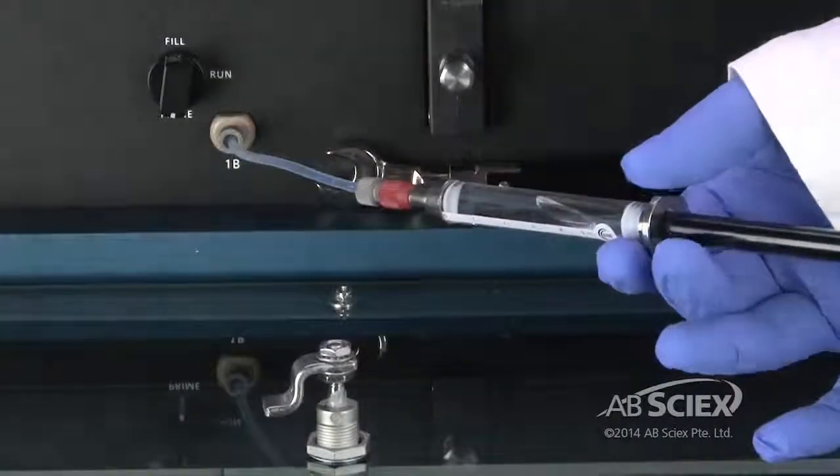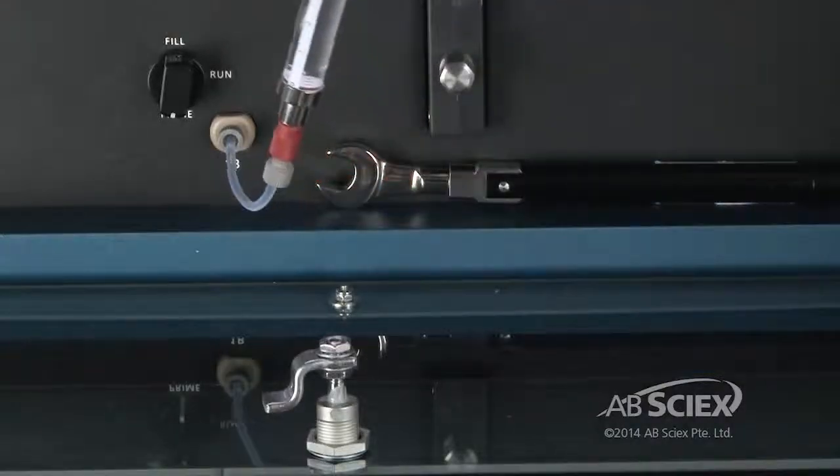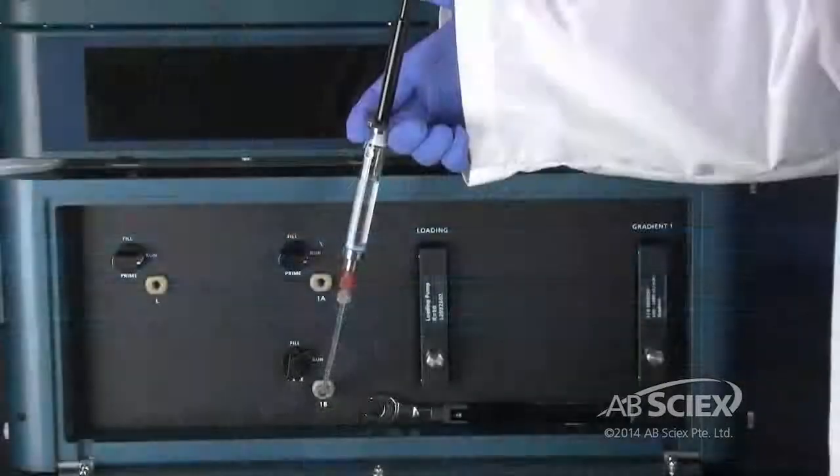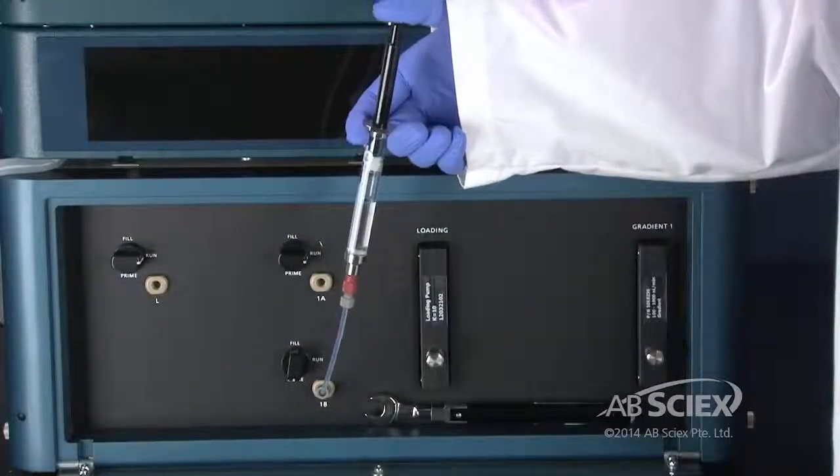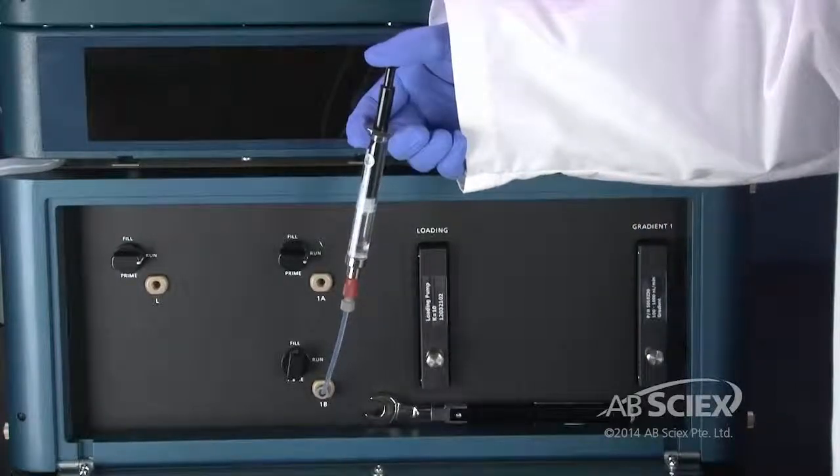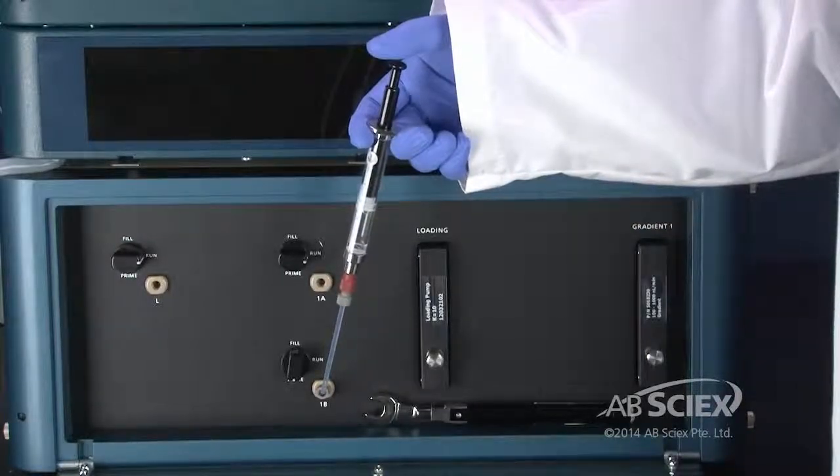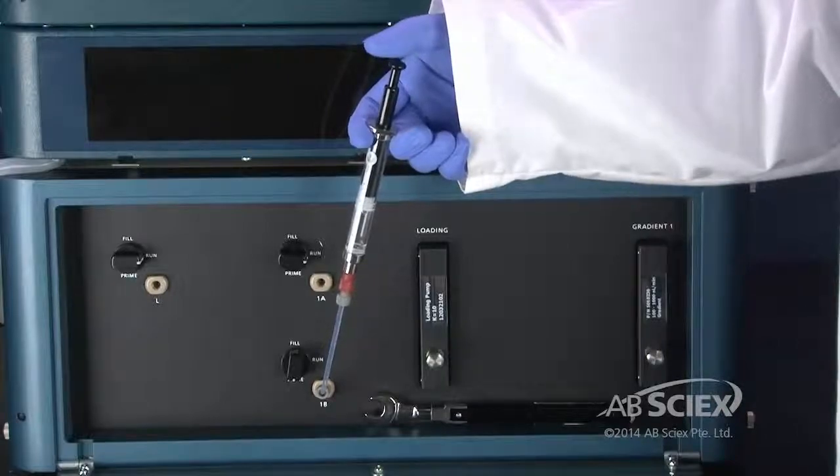The prime position connects the syringe to the pump. Position the syringe vertically to allow any bubbles to float to the top of the syringe. Then depress the plunger to push mobile phase from the syringe to the pump.